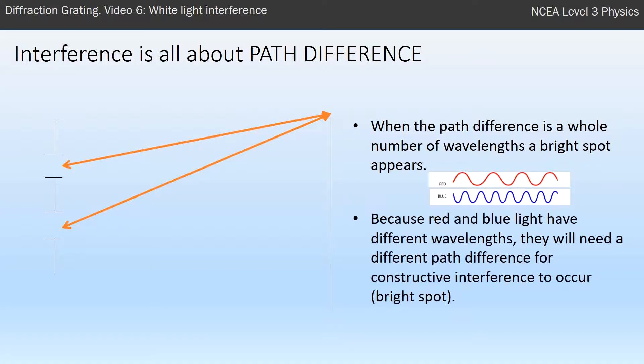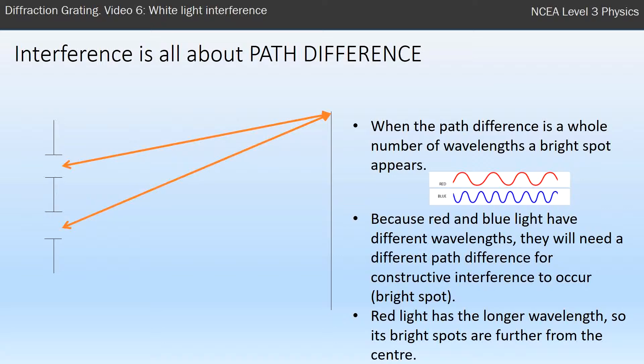So because they're different, we need a different path difference for this constructive interference to happen. And red light has the longer wavelength, so that path difference has to be bigger and that occurs further away from the center.